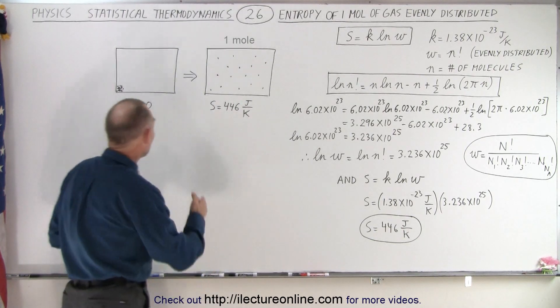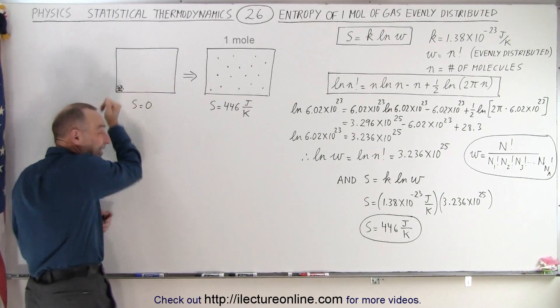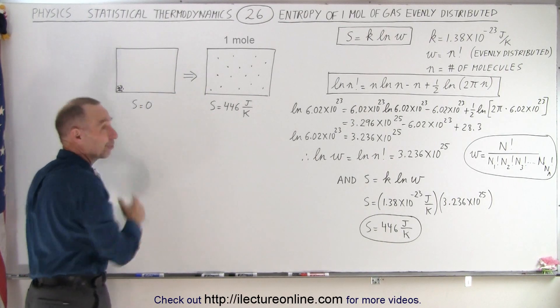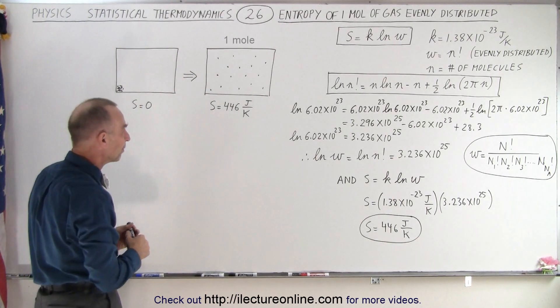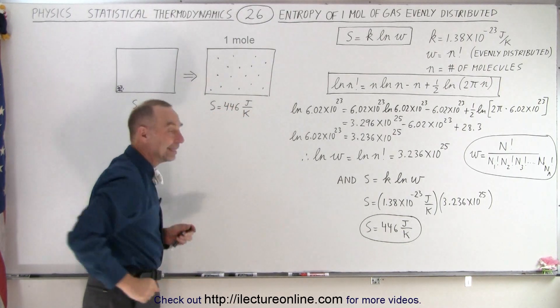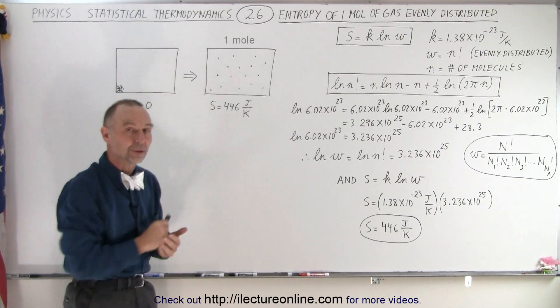Essentially we can see here that the entropy of one mole of gas molecules when they're all in one little corner of the container would be zero. This would be of course a very unlikely scenario. This is the more likely scenario when they're all evenly distributed and the entropy of that one mole of molecules is 446 joules per kelvin.